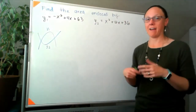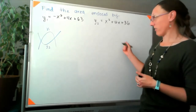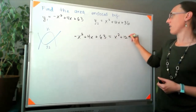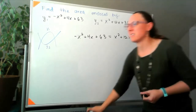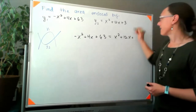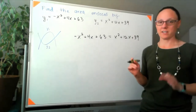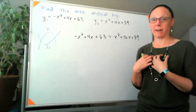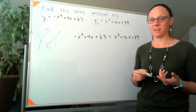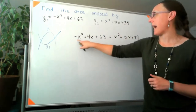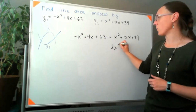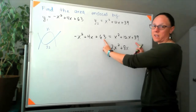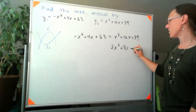But to write the actual integral I'm going to have to set them equal to each other. Setting -x² + 4x + 63 equal to x² + 12x + 39, and moving everything to the right side — I prefer a positive leading coefficient for factoring — I'll add x², subtract 4x, and subtract 63, giving 2x² + 8x - 24 = 0. It doesn't really matter which side we move things to, except I want a positive x² coefficient.